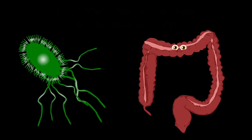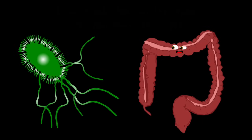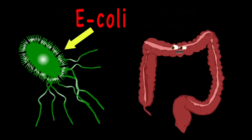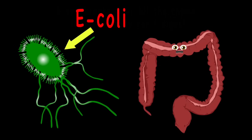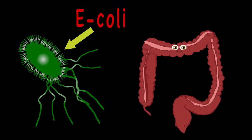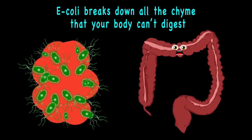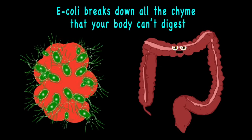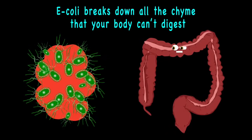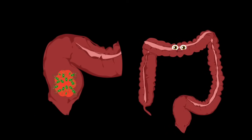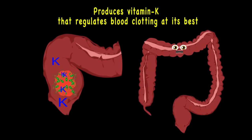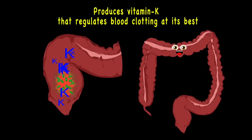An important one is E. coli — its job is very key. E. coli breaks down all the food that your body can digest, and produces vitamin K that regulates blood clotting at its best.